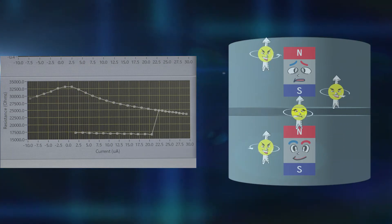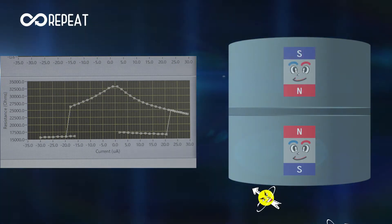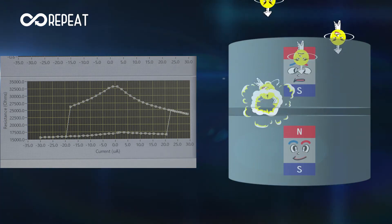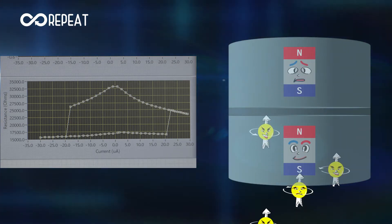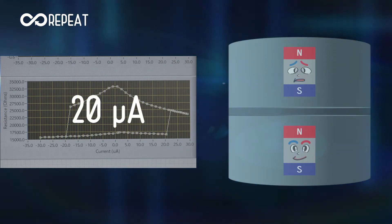This phenomenon is referred to as spin-torque magnetization switching, and with this scheme, you can efficiently control the magnetization of individual small magnets. For this device, magnetization reversal takes place at the current of plus minus 20 microamps.